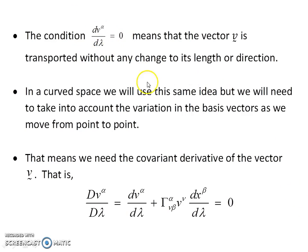And that means that condition means that the vector is transported without any change to its length or direction. We're going to pick up this same idea in curved space, where we're going to transport one vector to another. But because the basis vectors vary from point to point in a curved space, we need to consider the covariant derivative of v. And that's given down here, by this expression here.